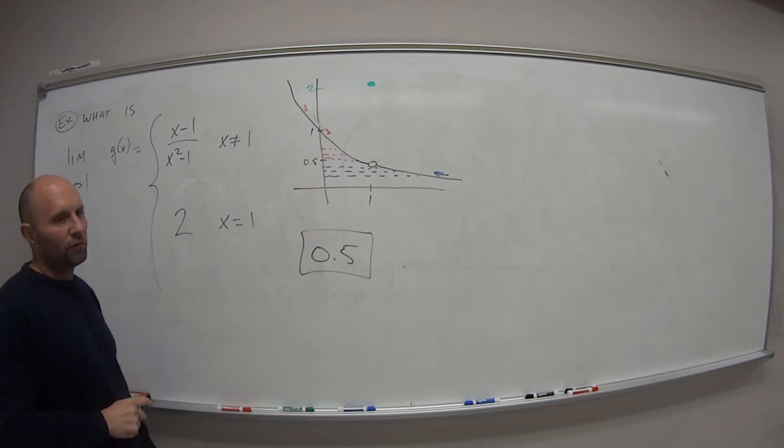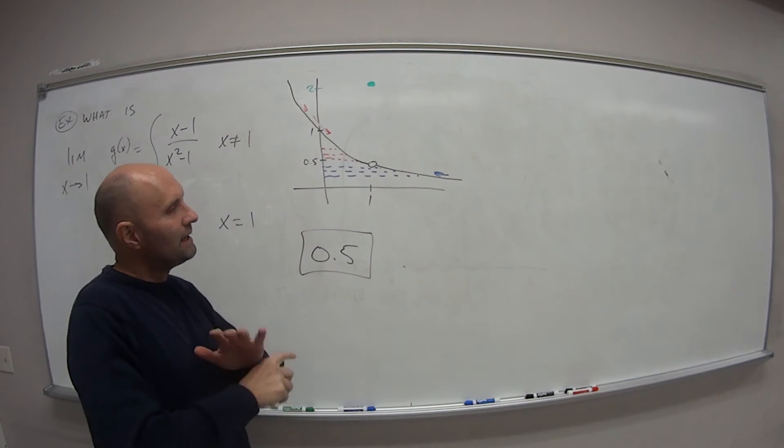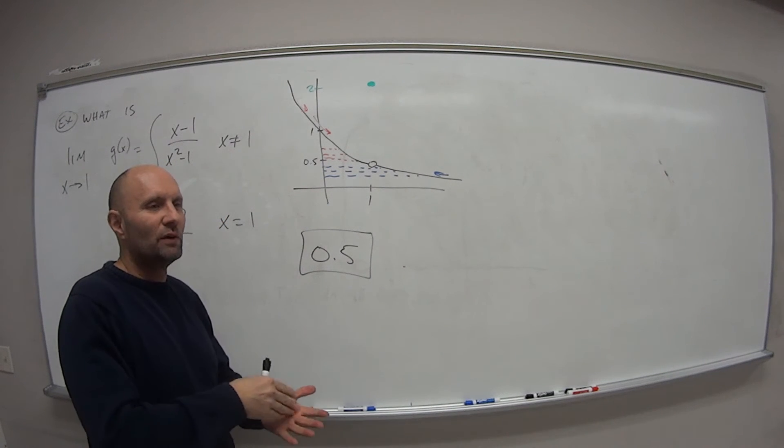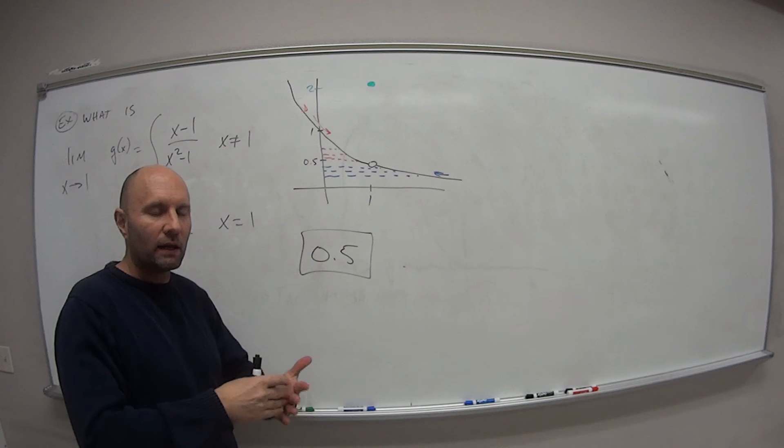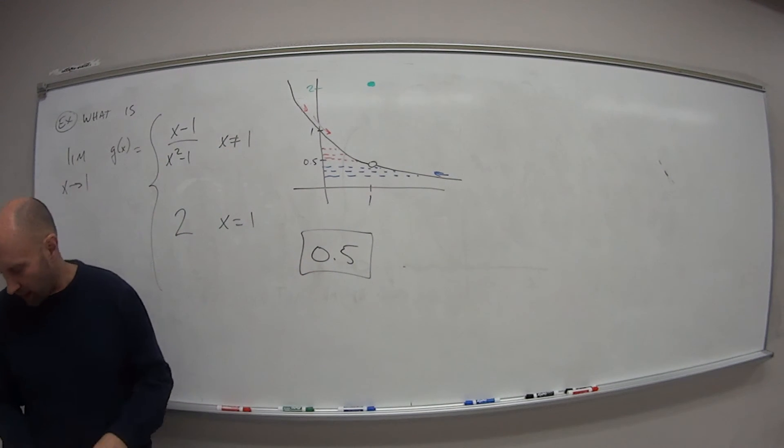So just because we put this point in that, oh, at x equals 1, our value is 2, doesn't matter in terms of limits because we don't really care what the value is at that specific point. We're only wondering what are the values as it approaches that point.